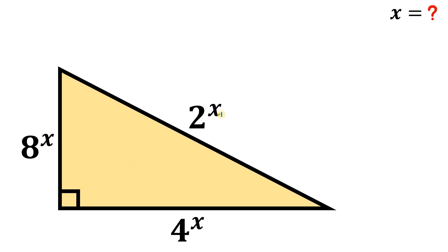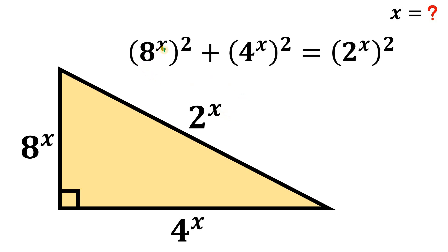Since it is a right triangle, we use the Pythagorean theorem. So we have 8 raised to the power of x, raised to the power of 2, plus 4 raised to the power of x, raised to the power of 2 — the legs of this right triangle — equals the square of the hypotenuse, 2 raised to the power of x, raised to the power of 2.